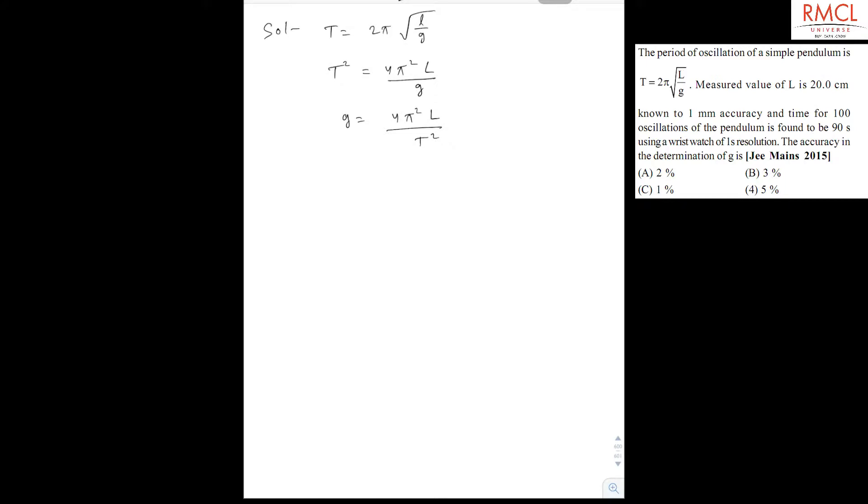Now if we take log on both sides, it becomes log g = log 4π² + log l - 2 log t.